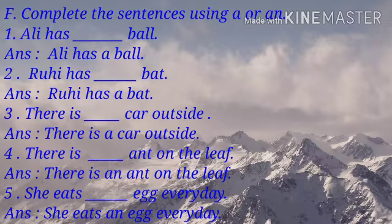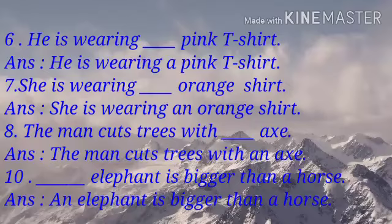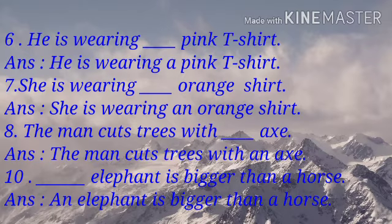Number 4, there is dash ant on the left — answer: there is an ant on the left. Number 5, she eats dash egg every day — answer: she eats an egg every day. Number 6, he is wearing dash pink t-shirt — answer: he is wearing a pink t-shirt. Number 7, she is wearing dash orange shirt — answer: she is wearing an orange shirt.